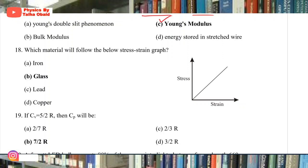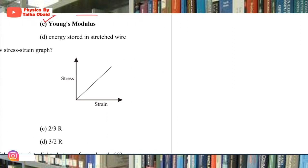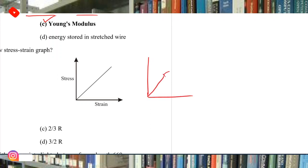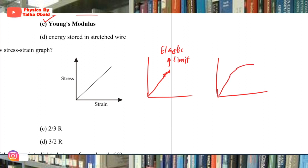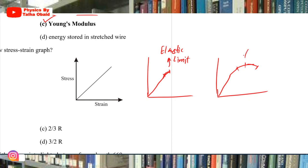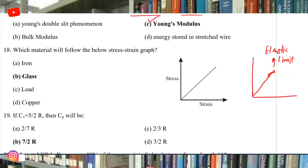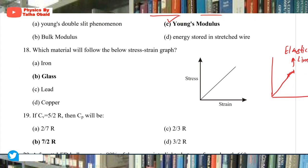Question 18: Which material follows the given stress-strain graph? Brittle substances — their stress-strain graph curves slightly at the maximum end; once elastic limit is crossed, they break. Ductile substances follow full plastic deformation. Since an inclined straight line is shown, it represents a brittle substance, and the only brittle substance in the options is glass.